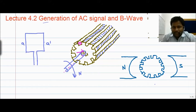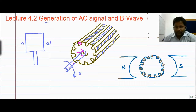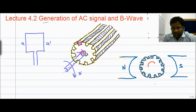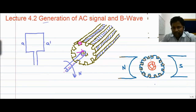Let us suppose a field is there like this, and this is called the armature with slots where we have to fill the windings. After filling the windings we can generate AC. These are basically the windings, and there is a commutator segment. It is a commutator or we can say slip rings — it depends upon DC or AC — and the output is coming like this fashion.